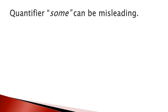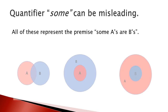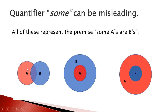The quantifier 'some' can be misleading. All of these represent the premise 'some A's are B's.' If you look at the first picture, you can see some A's are B's. The second picture also represents the same thing — some A's are B's. The third one also shows some A's are B's.